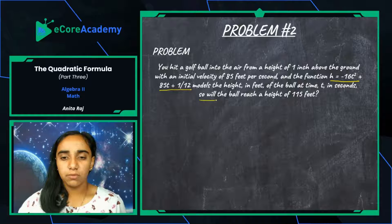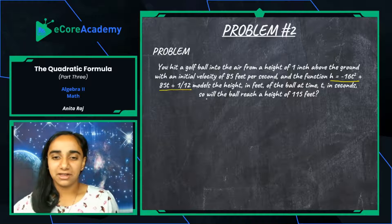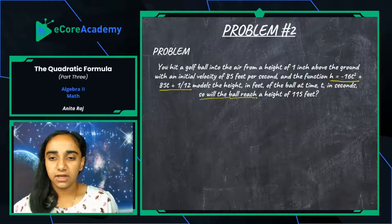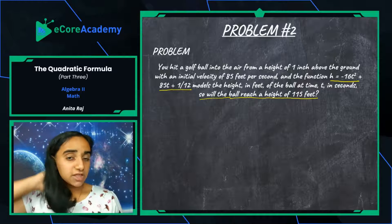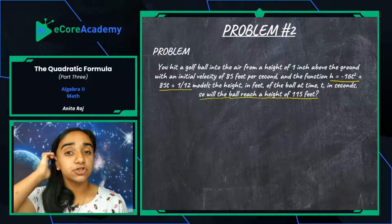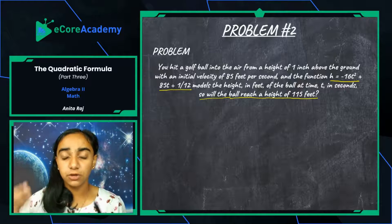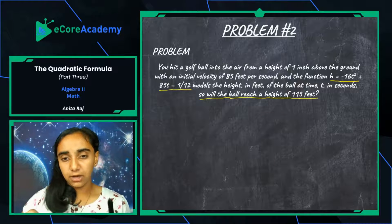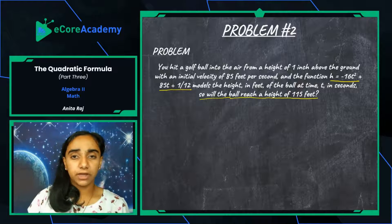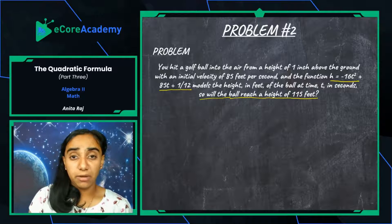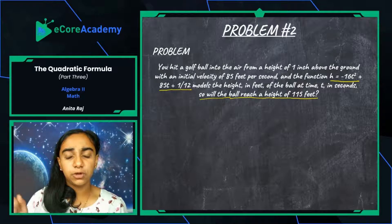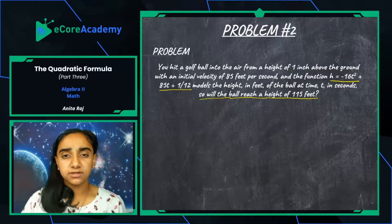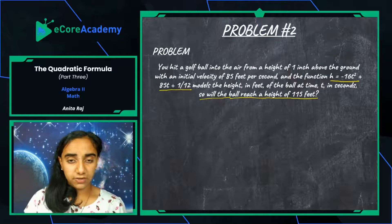We're going to use the discriminant to solve this problem. I want you to understand we're not solving for a number — this is more of a yes or no question. If someone asked 'will the ball reach a height of 115 feet?' you wouldn't reply with a number, you'd reply yes or no. So while we are doing math to figure out the answer, our final answer has to be a yes or a no.